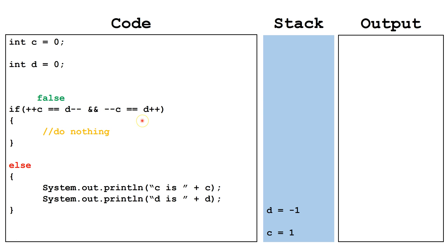Since this entire expression evaluates to false, we move down to else, and then we output the value of c, which is currently one, and the value of d, which is currently negative one.